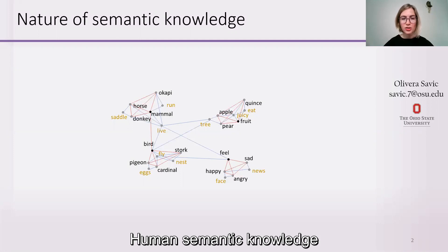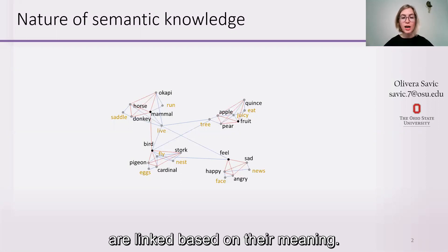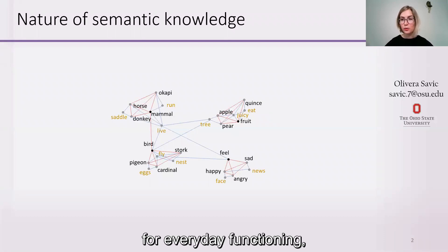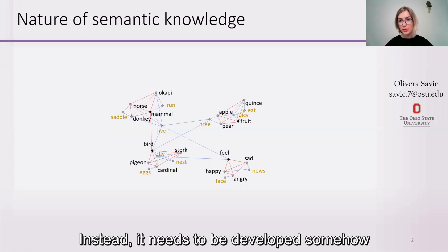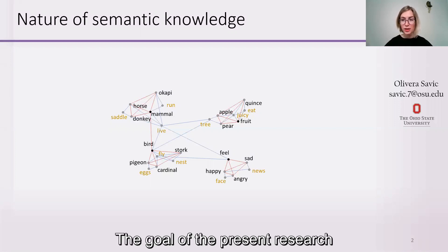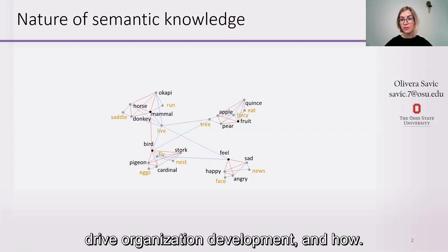Human semantic knowledge functions as an organized lexico-semantic network in which concepts denoted by words are linked based on their meaning. Although this organization is critical for everyday functioning, we are not born with an organized lexico-semantic network. Instead, it needs to be developed through our experience. The goal of the present research is to understand which aspects of our experience drive organization development and how.